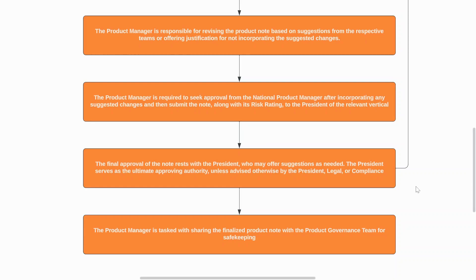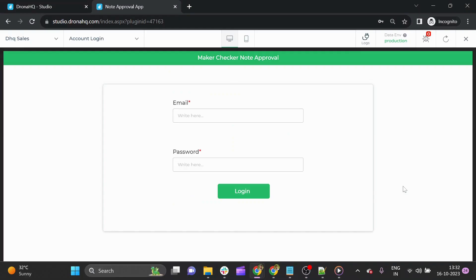Crafting a node approval app requires a thoughtful approach: choosing a suitable development platform, designing the UI, implementing a robust workflow engine, defining user roles, hierarchical approval logic, a document management system, and mobile accessibility. Developing it with low-code tools becomes much easier. Now let's see how you can build this use case with DronaHQ.